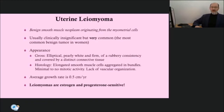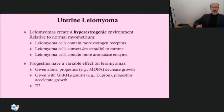Each leiomyoma is derived from a single progenitor myocyte, and multiple tumors within the same uterus each show independent cytogenetic origins. Following their genesis, uterine leiomyomas are estrogen- and progesterone-sensitive tumors. Consequently, they develop during the reproductive years. After menopause, leiomyomas generally shrink and new tumor development is infrequent. These sex steroid hormones likely mediate their effect by stimulating or inhibiting transcription or cellular growth factor production.